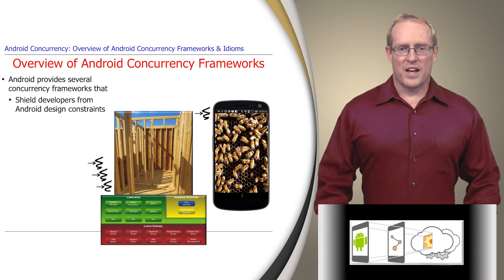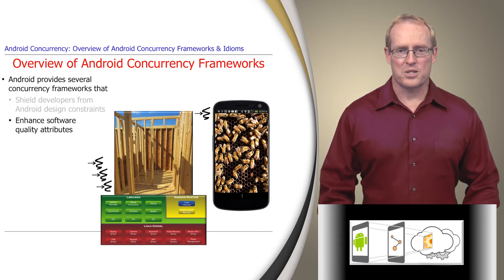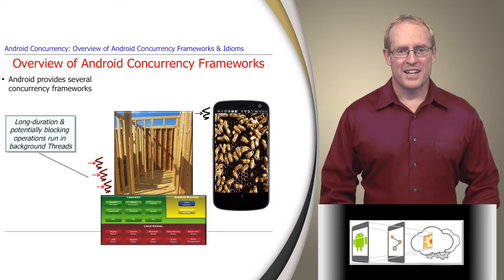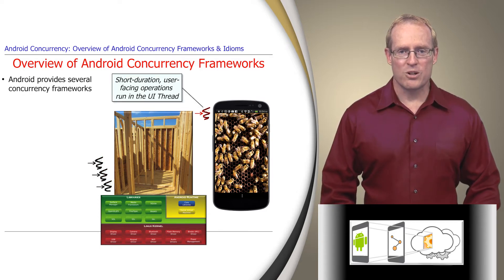To shield developers of concurrent applications and services from the accidental and inherent complexities of Android design constraints, as well as to enhance software quality attributes, Android provides several concurrency frameworks. These frameworks allow certain computations, typically long-duration and blocking operations, to run in background threads, and other computations, typically short-duration user-facing operations, to run in the user interface thread.